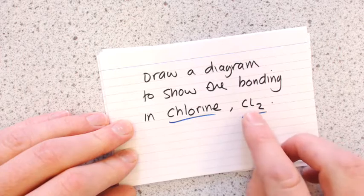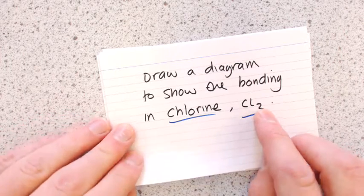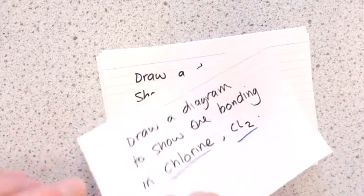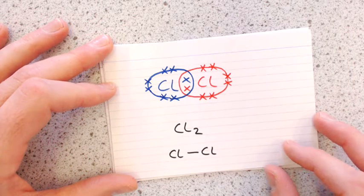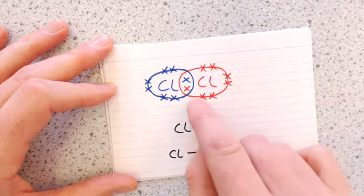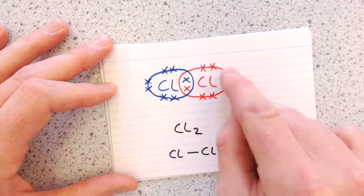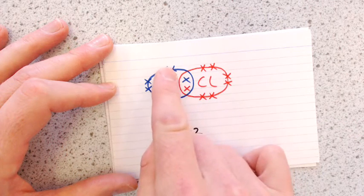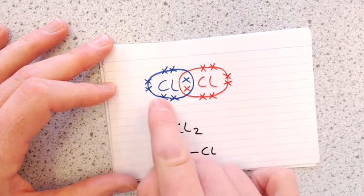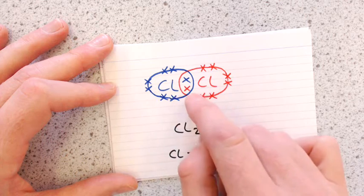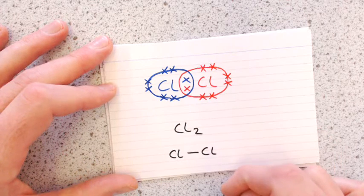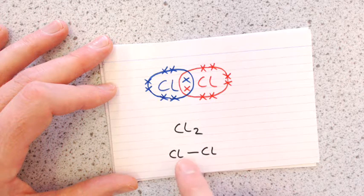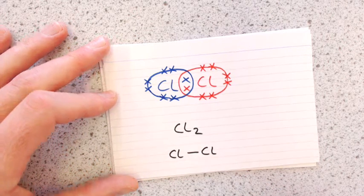Chlorine: Cl₂ — again two non-metals, so covalent bonding. Each chlorine has seven electrons. To get a full outer shell they share one electron each across the middle. You write that as Cl₂, or draw it as Cl–Cl.